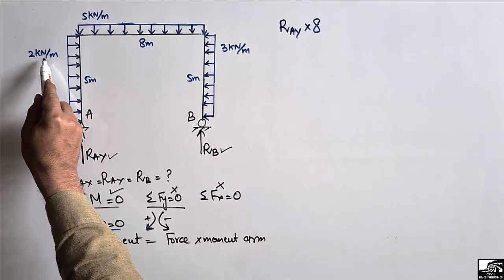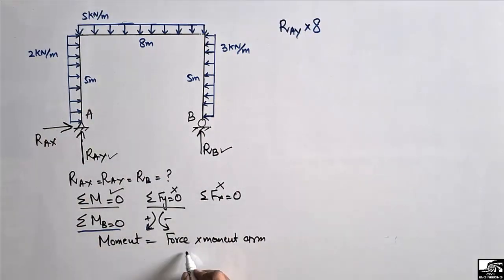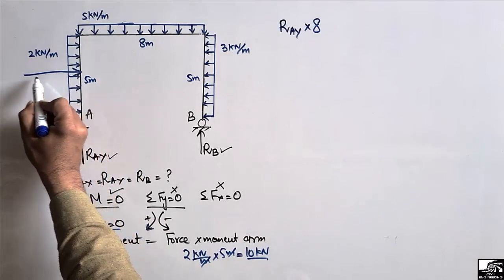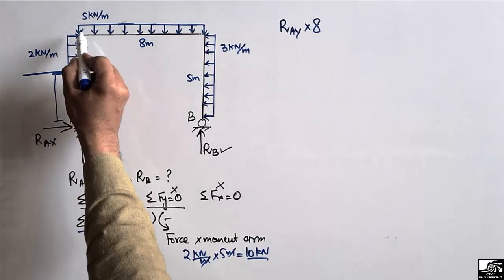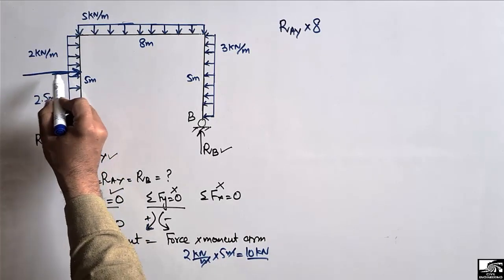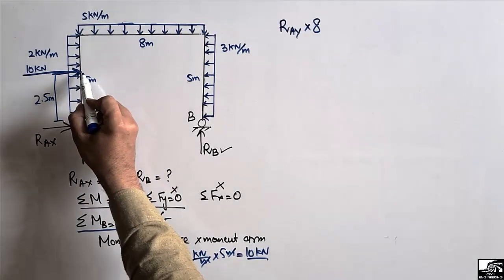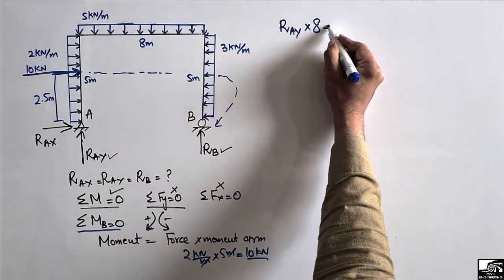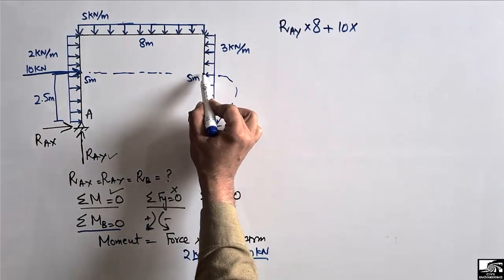The 2 kN/m load on the left column acts over a length of 5 meters, giving a resultant of 2 × 5 = 10 kN acting at the center of the column, which is 2.5 meters from the support. This creates a clockwise moment about point B, so it is positive: 10 kN multiplied by a moment arm of 2.5 meters.